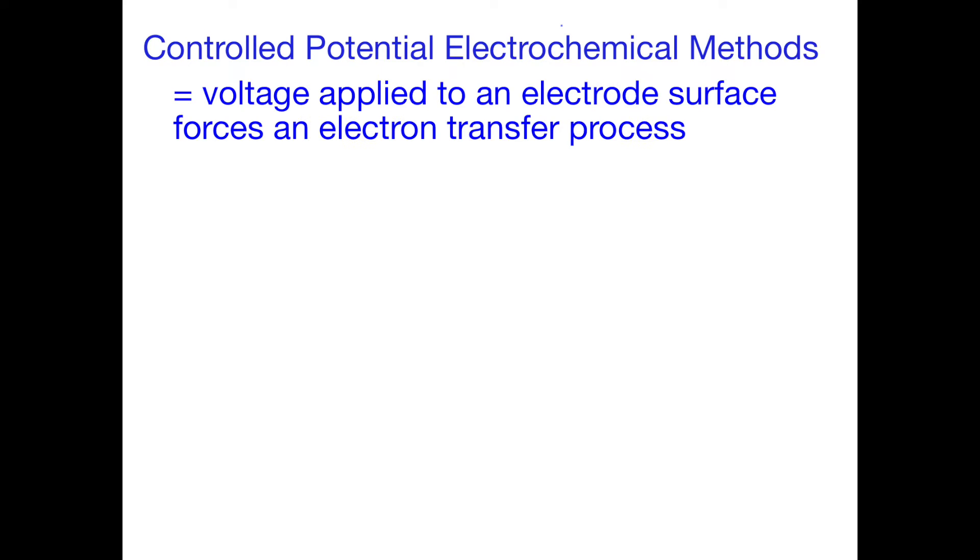In this lesson, we're going to look at a number of electrochemical methods of analysis that are based on applying a voltage to an electrode surface to force an electron transfer reaction to take place. Here we deliberately push the system away from its equilibrium or resting state and monitor the rate of the reaction that occurs in response. We call these controlled potential electrochemical methods.